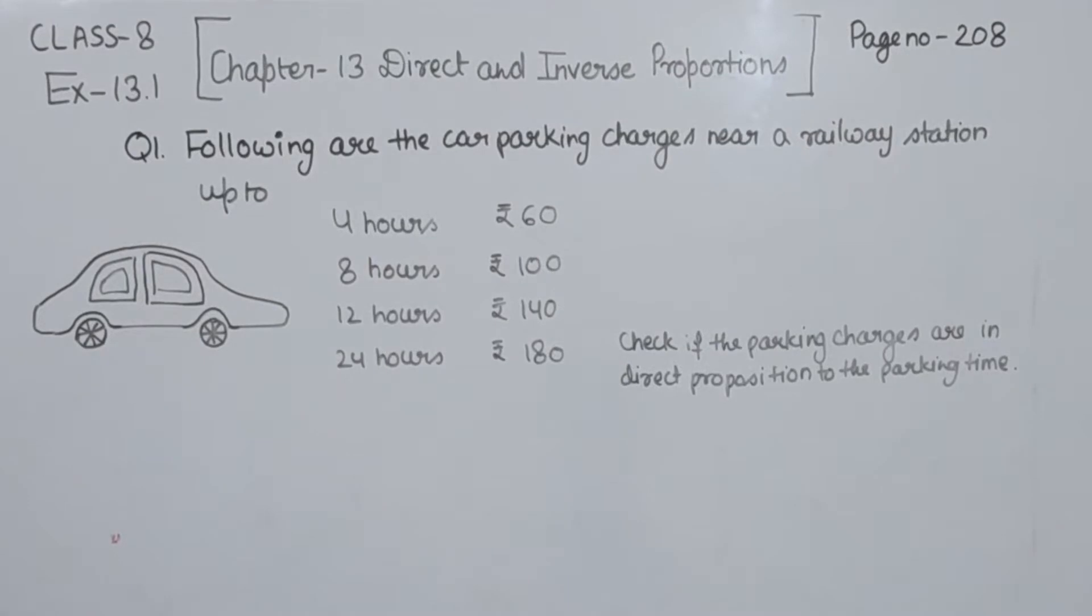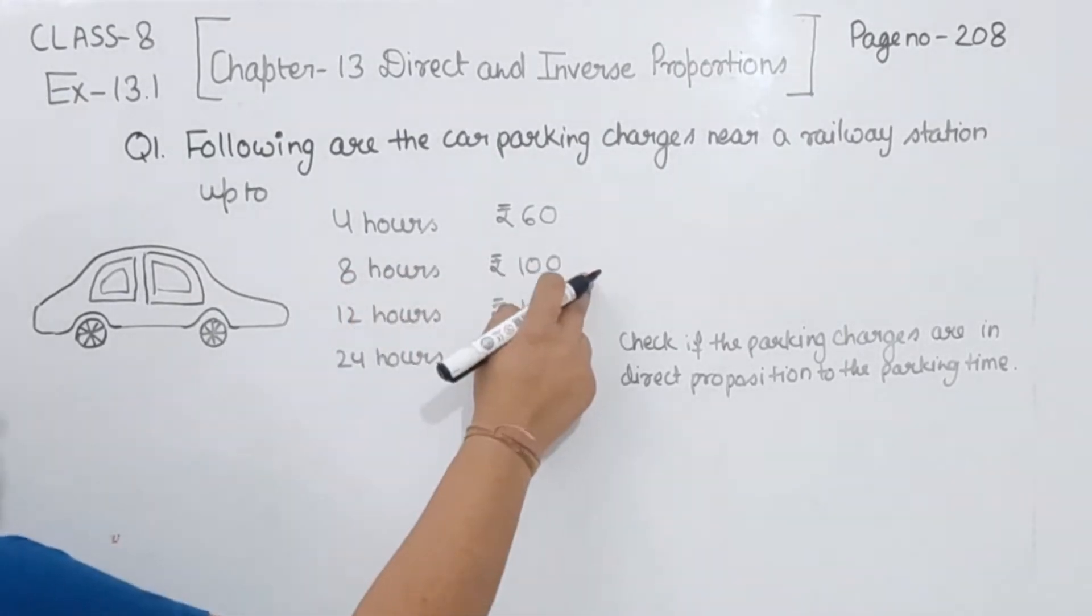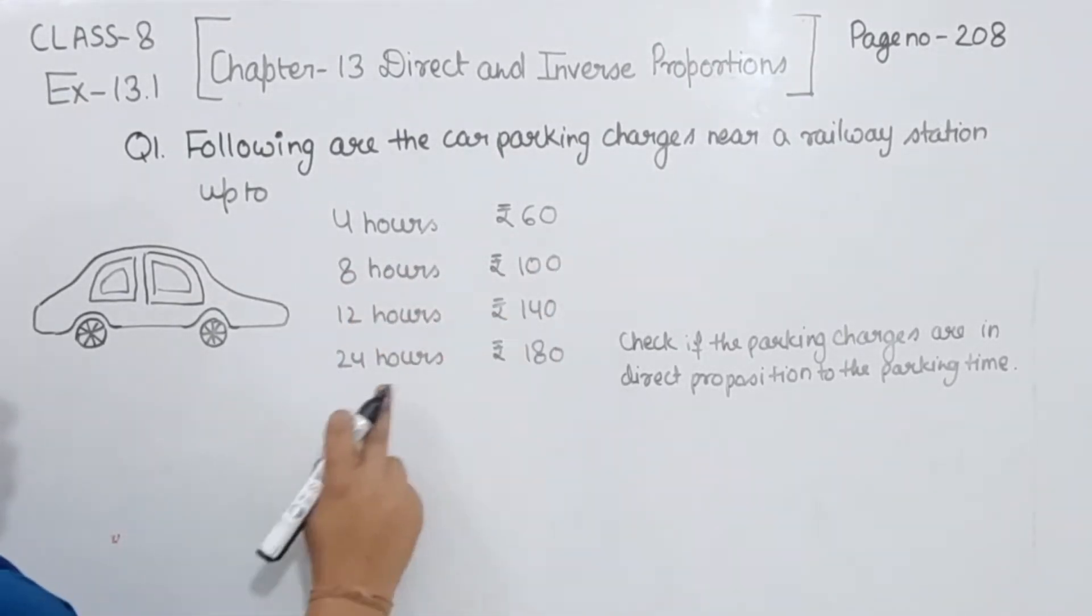Following are the car parking charges near a railway station: up to 4 hours Rs. 60, 8 hours Rs. 100, 12 hours Rs. 140, and 24 hours Rs. 180.